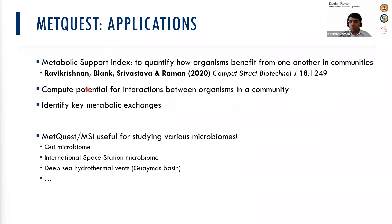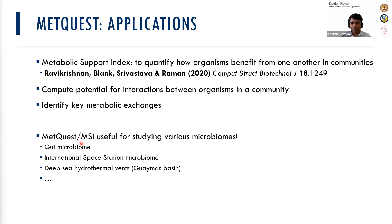The most important application is to quantify how organisms benefit from one another in communities. We also did experimental studies to corroborate our predictions. Importantly, you get to identify what are the key metabolic exchanges — in communities such as the gut, it's very interesting to see how short-chain fatty acids or certain amino acids are exchanged and promote growth of particular organisms. Currently we are studying a bunch of microbiomes including the International Space Station microbiome — available as a preprint — and the deep-sea hydrothermal vents of the Guaymas Basin, and also the ocular microbiome.